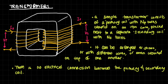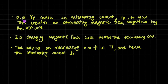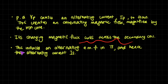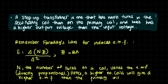If you put a current in the primary coil, current comes out of the secondary coil. The potential difference in the primary coil causes an alternating current IP to flow, and this creates an alternating magnetic field, magnified by the iron core because the iron core also gets magnetized and adds to the magnetic field. The changing magnetic flux cuts across the secondary coil — this is important vocabulary to memorize — and this induces an alternating electromotive force in the secondary coil, and hence the alternating current IS.